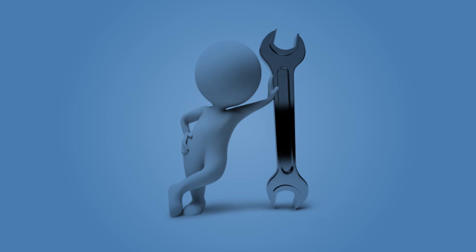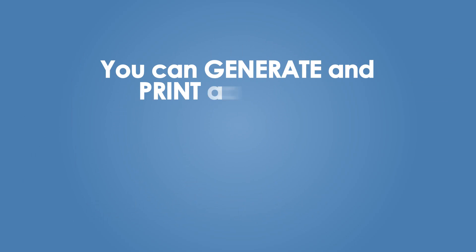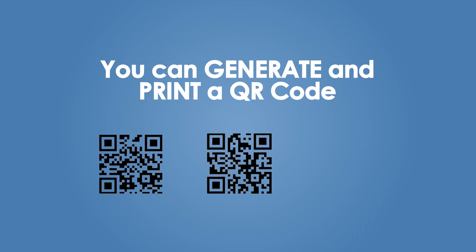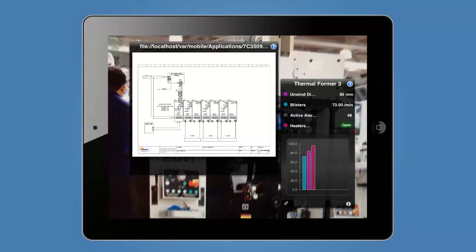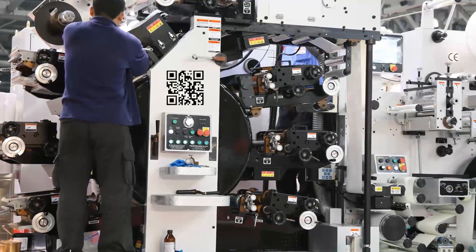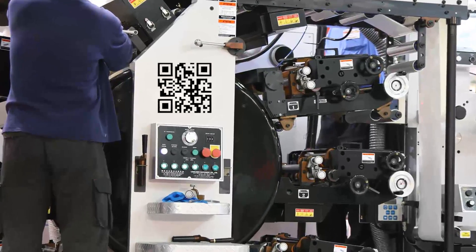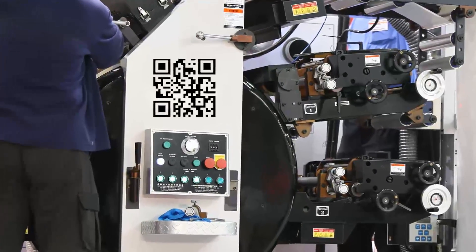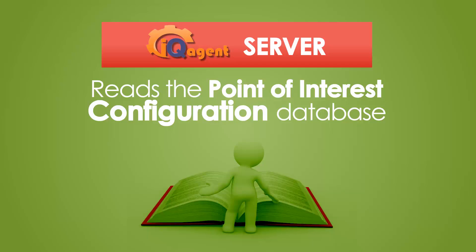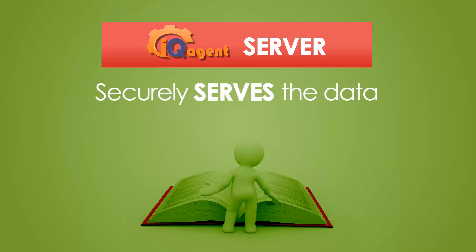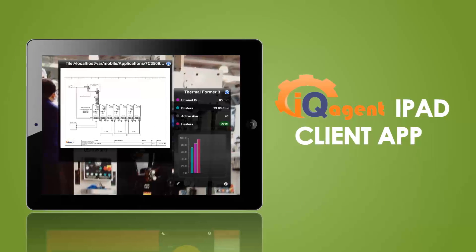Once you've configured all your points of interest, you can generate and print a QR code for each that will act as a link to the point of interest for the IQ Agent iPad app. You place these QR codes on the plant floor near the actual equipment or process the point of interest represents. The IQ Agent Server reads the point of interest configuration database and securely serves the data to the IQ Agent iPad Client App on demand.